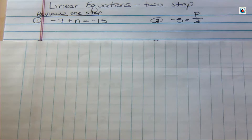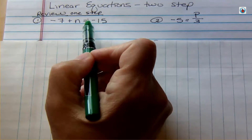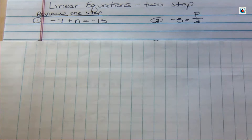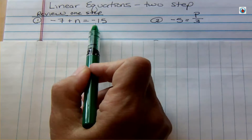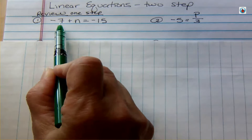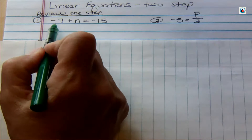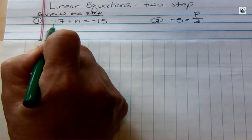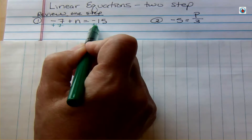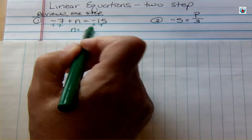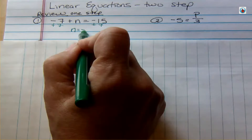Let's review the one-step equations. When you have an equation with an equal sign, you want to get the variable by itself — get rid of the number that's with it. We don't want to move negative 15; we want n to be alone, so we get rid of the minus 7 by adding 7 to both sides. The 7s cancel and we get n equals negative 15 plus positive 7, which is negative 8.